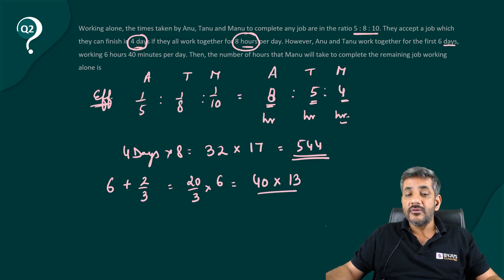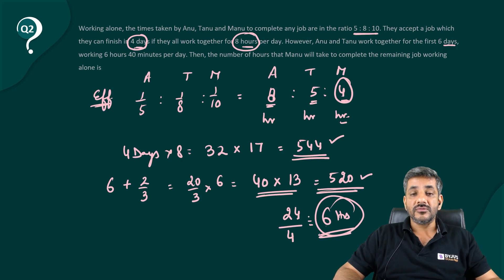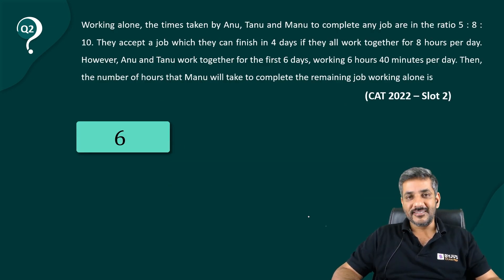So they must have made 13 units every hour. So they have already made 520 units. Total units are 544. 520 have already been made. We are left with just 24 now and these 24 are made by Manu by making 4 every hour. So Manu is going to take 6 more hours to complete the work and that is the answer to the question. This is an aptitude way of solving the question. Thank you.